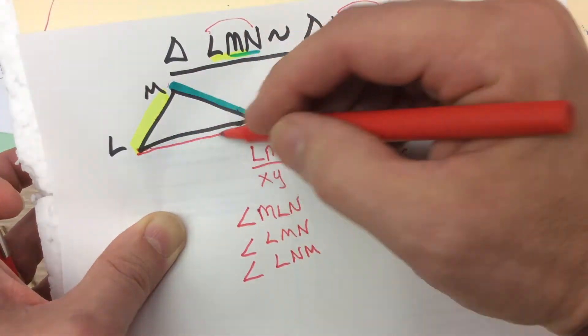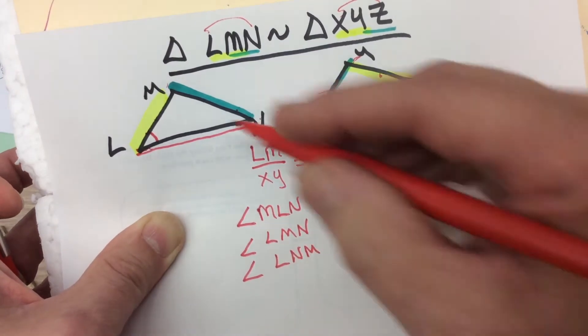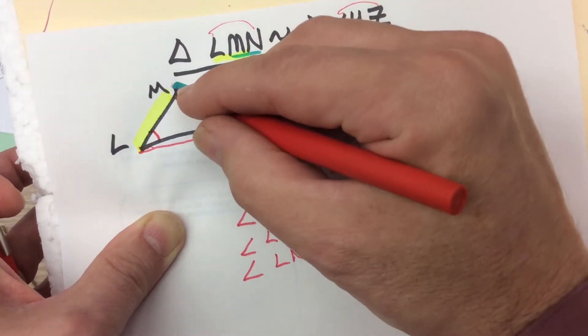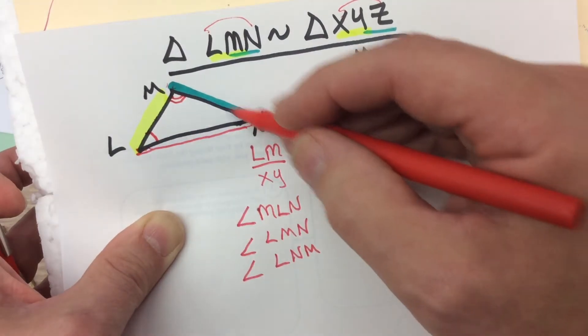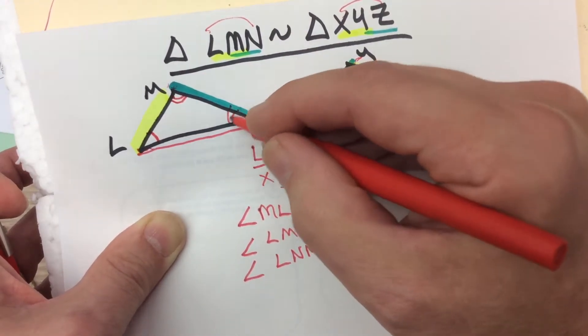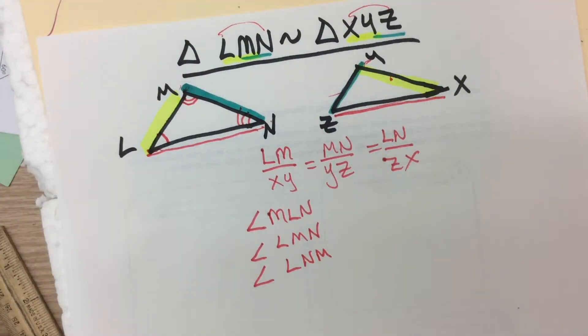So these angles, angle MLN, angle LMN, and angle LNM are the three angles of the triangle on the left. They correspond to angles on the right, and they do so in the same order as the similarity statement.